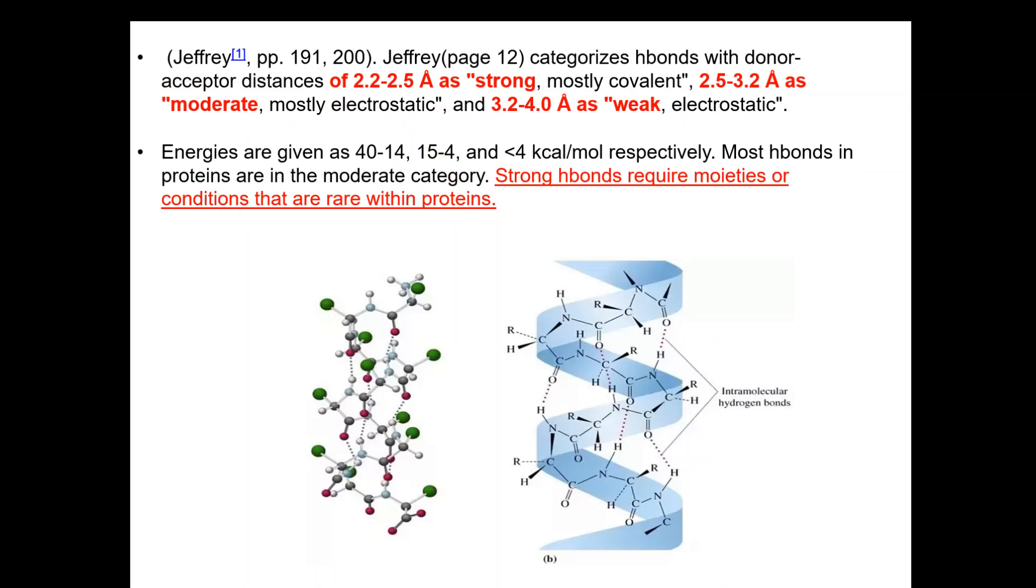There is a nice book that classifies hydrogen bonds into three classes: weak, moderate, and strong. As a computational chemist you should know this because they classify them according to distance. A distance between the hydrogen bond donor and acceptor of 2.2 to 2.5 angstroms is a strong hydrogen bond - the closer you are, the stronger you will be. A distance of 2.5 to 3.8 is moderate and 3.2 to 4 angstroms is weak.